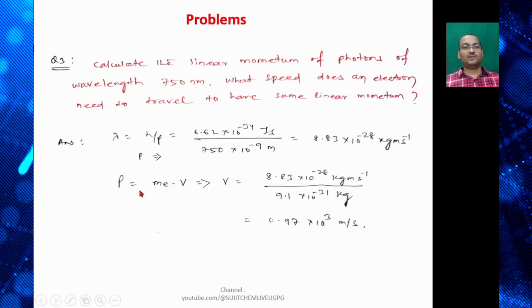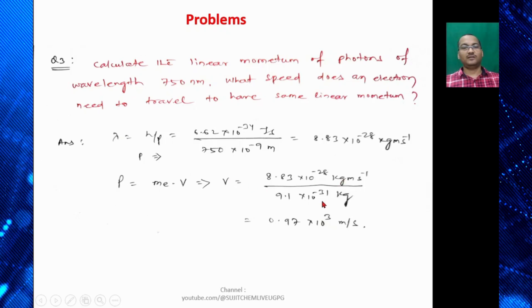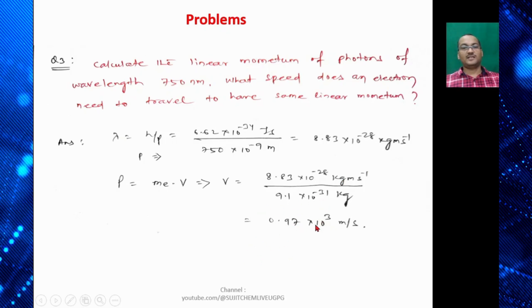So that becomes 8.83×10⁻²⁸ kg meter per second. And P = mₑ × v. So v = P/mₑ. So v found to be 0.97×10³ meter per second.